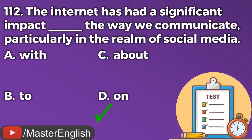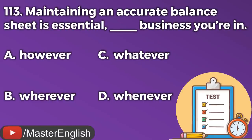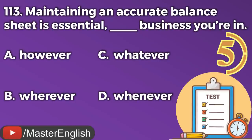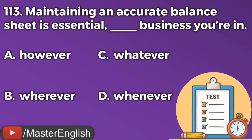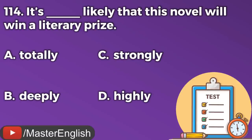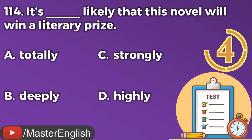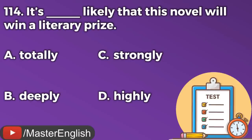Question number one hundred and thirteen. Maintaining an accurate balance sheet is essential ___ business you're in. A: However. B: Wherever. C: Whatever. D: Whenever. The correct answer is C: Whatever. Whatever business you're in. Question number one hundred and fourteen. It's ___ likely that this novel will win a literary prize. A: Totally. B: Deeply. C: Strongly. D: Highly. The correct answer is D: Highly. It's highly likely that this novel will win a literary prize.